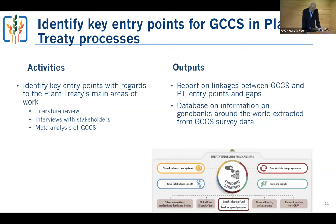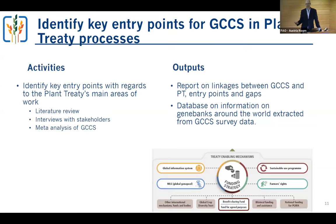Identifying key entry points means mapping all the different groups in the Plant Treaty, their activities, and where the strategies could be helpful and relevant for them. For example, consider the benefit-sharing fund — there could be a mechanism where strategies are acknowledged in the selection process of new projects as evidence-based documents that countries making proposals could refer to and align their proposals with the priorities identified in the strategies. At the same time, the committee assessing proposals could take into account whether they are aligned with priorities in the strategies.